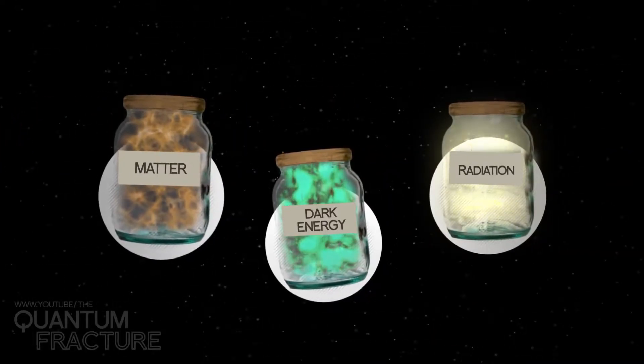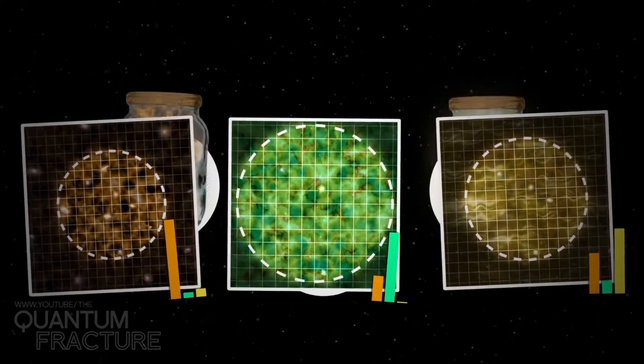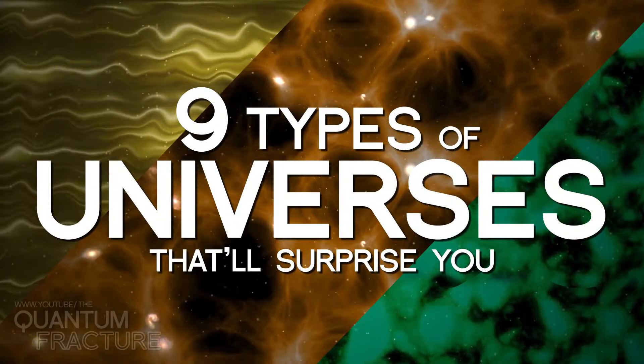So, summing up, matter, radiation, and dark energy. Depending on how they're combined, we get one universe or another. Ready to get started? Here are the nine types of universes that'll surprise you.